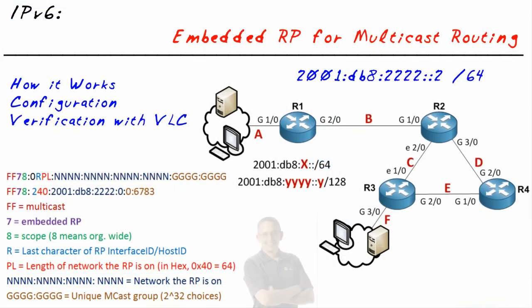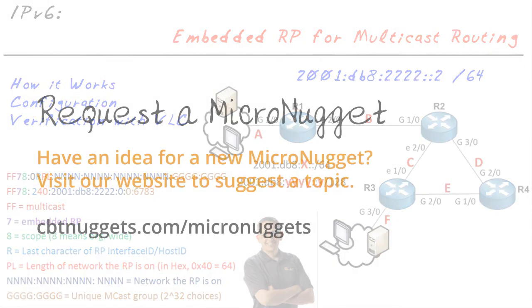In this micronugget, we've taken a look at one way of training our network devices on who the rendezvous point is — through embedding the rendezvous point's address inside of a multicast group address. I hope this information has been informative and I'd like to thank you for viewing.